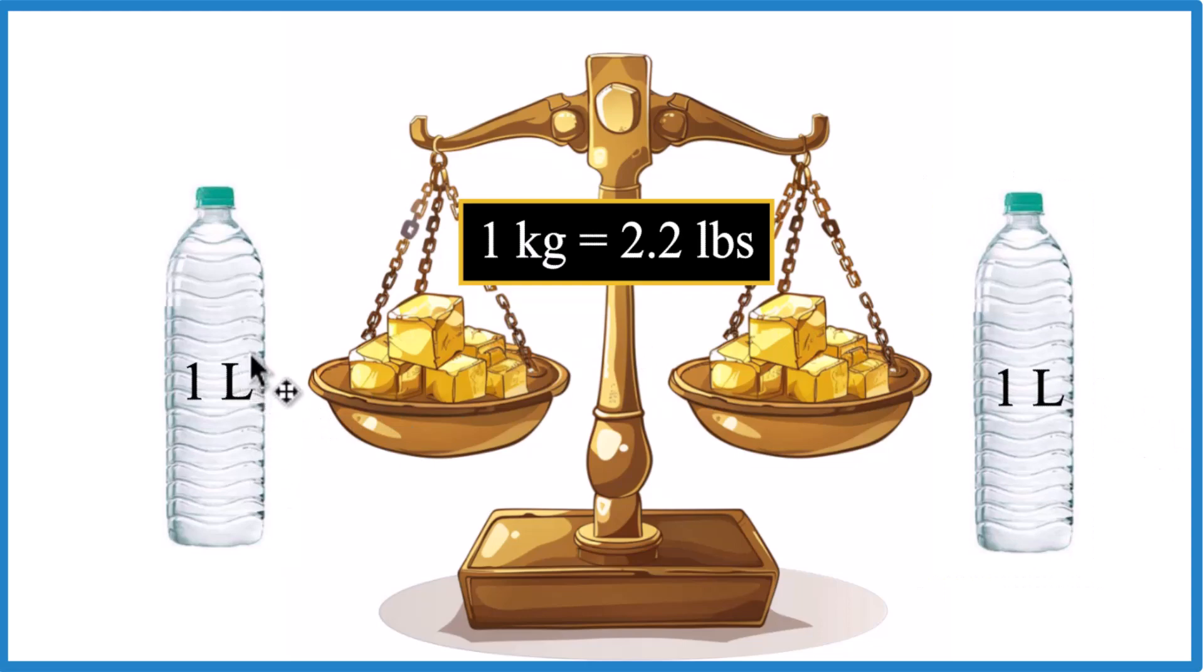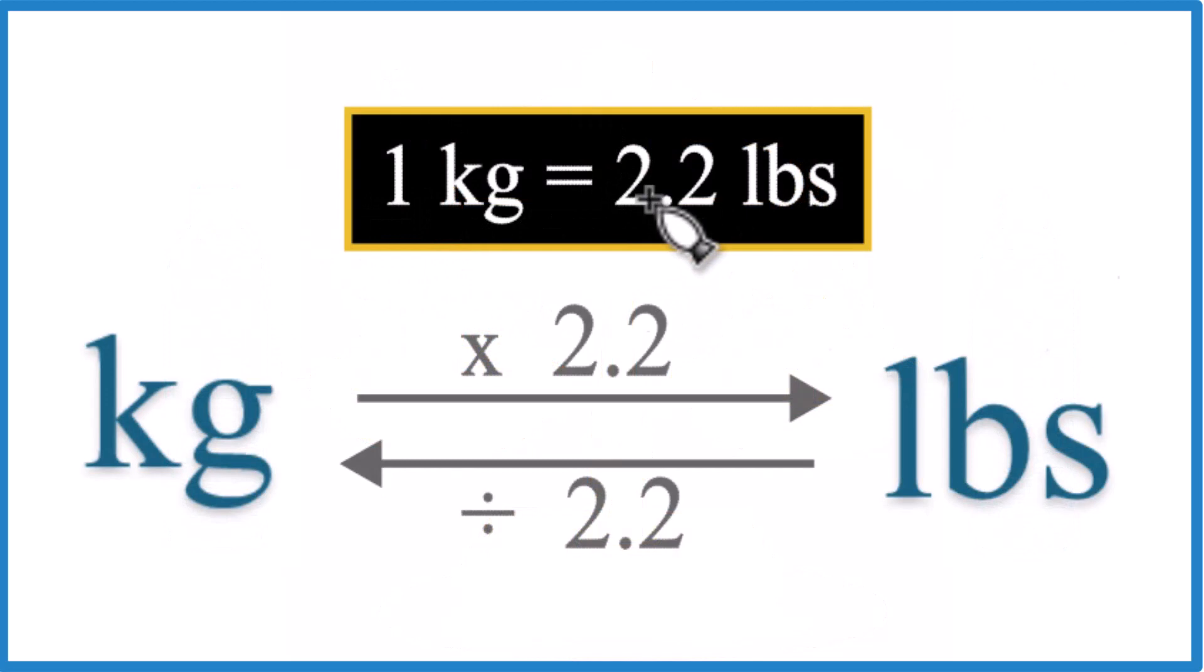So now you have an idea how much a kilogram weighs. Let's do some conversions. Since one kilogram is 2.2 pounds, two kilograms would be twice that number. When you go from kilograms to pounds, you just multiply by 2.2.